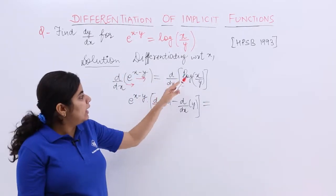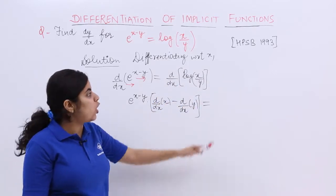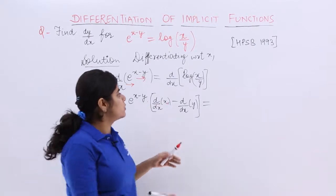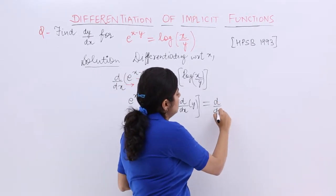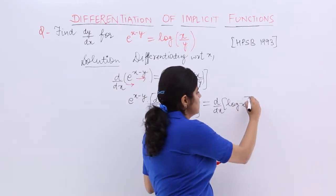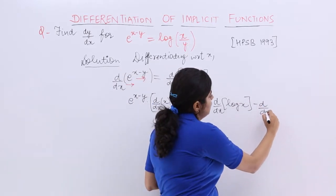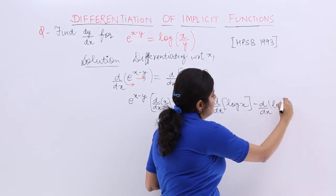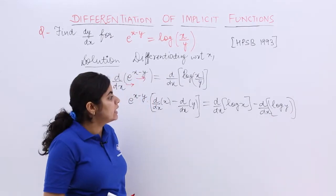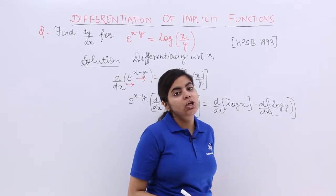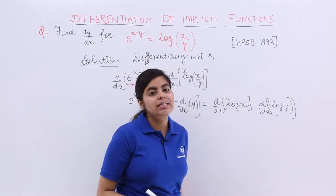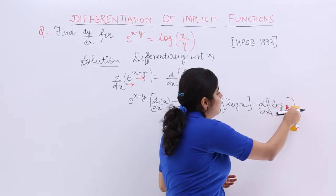On the right-hand side, it is d by dx of log x upon y. What is the formula of log m upon n? It is log m minus log n. So you have to separate it — it is basically differentiation of log x minus differentiation of log y. So two steps are done together: differentiating log x and log y both.